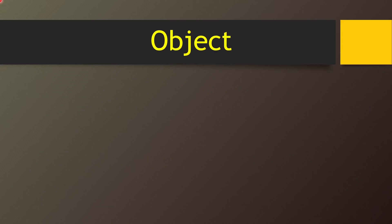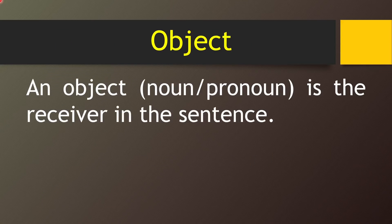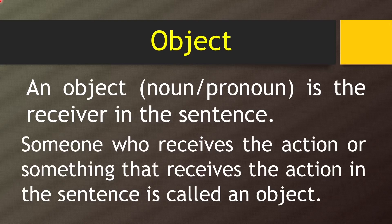Now let me talk about object. An object is the receiver in the sentence. It can be a noun or a pronoun. Someone who receives the action, or something that receives the action in the sentence, is called an object. It is totally the opposite of subject.